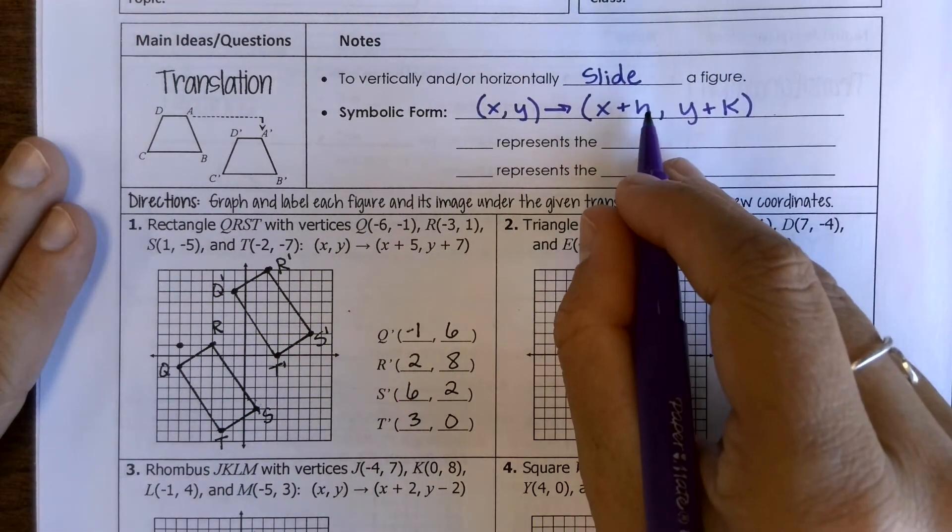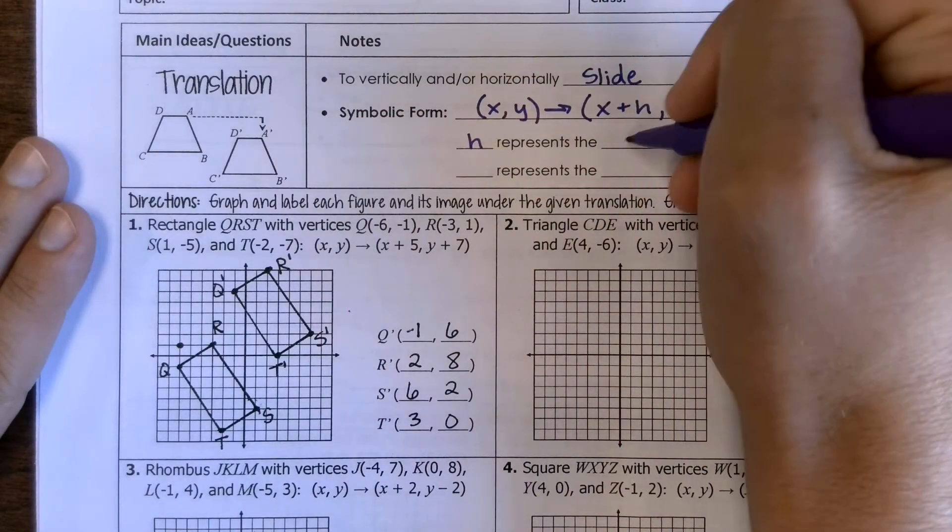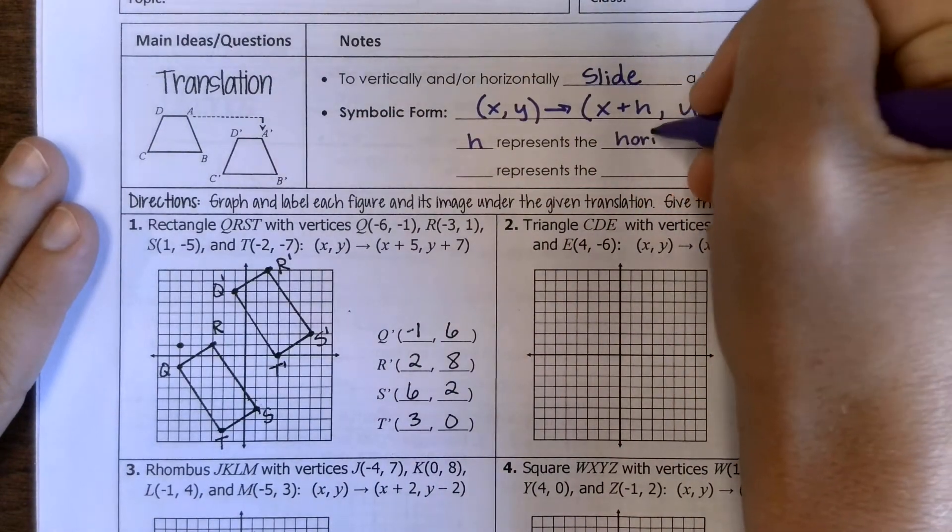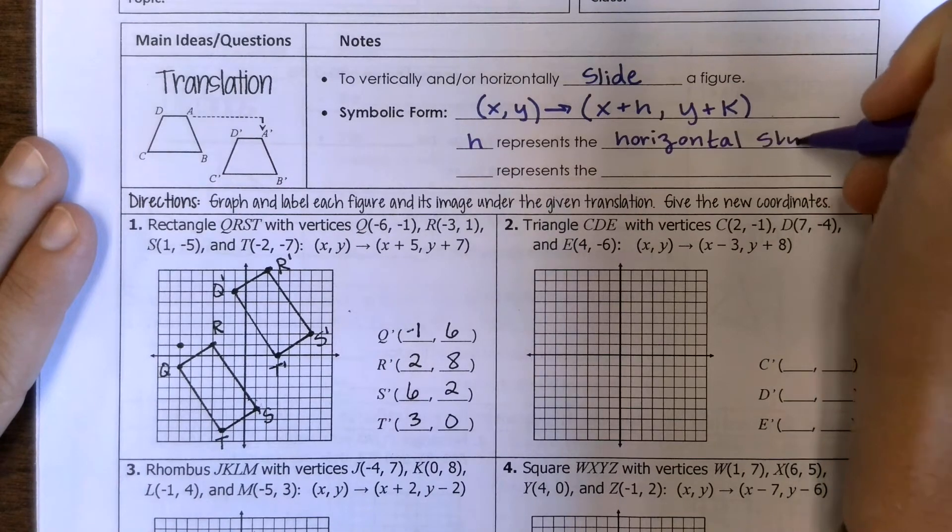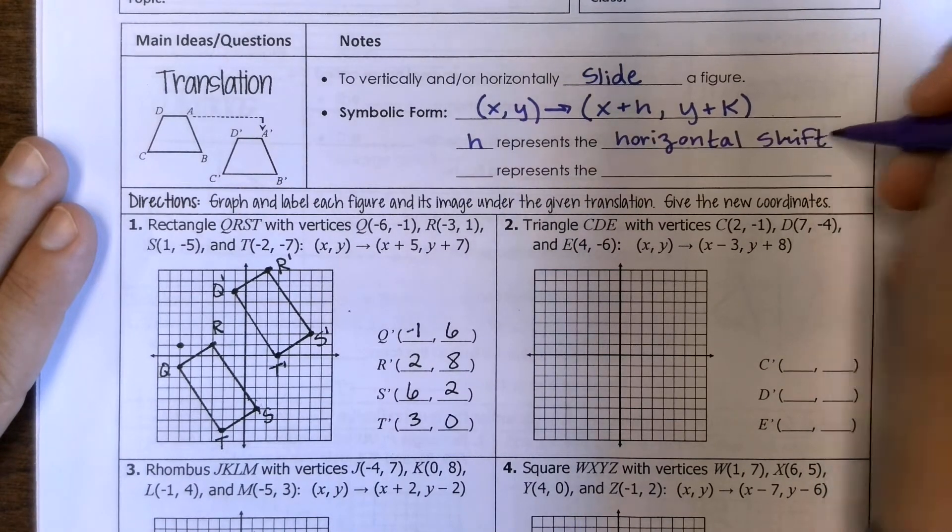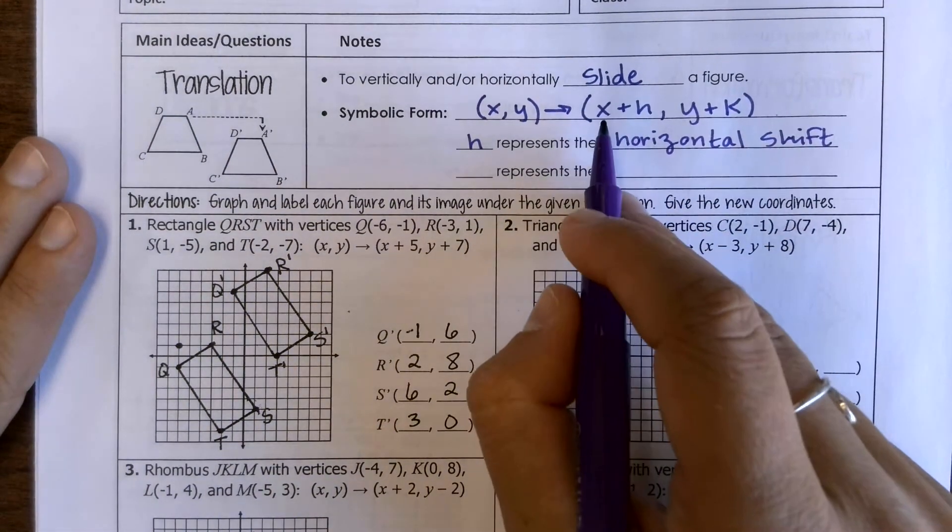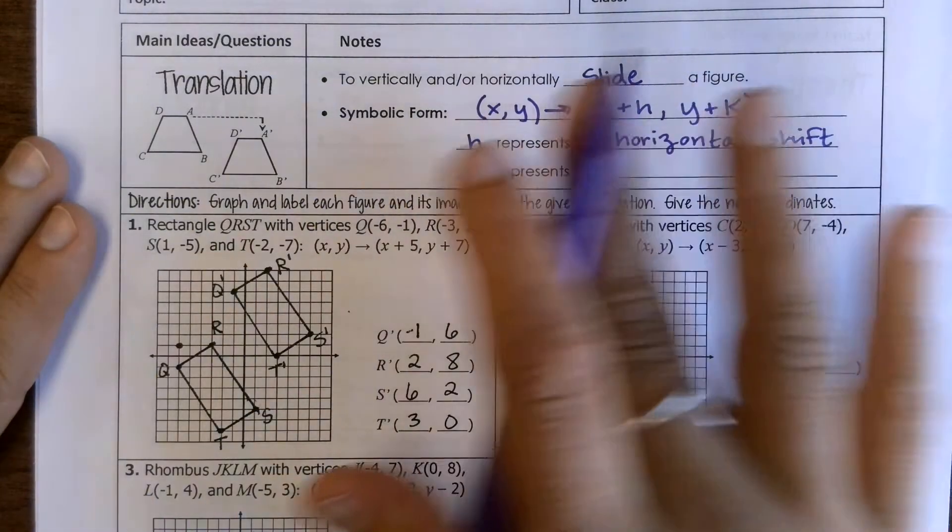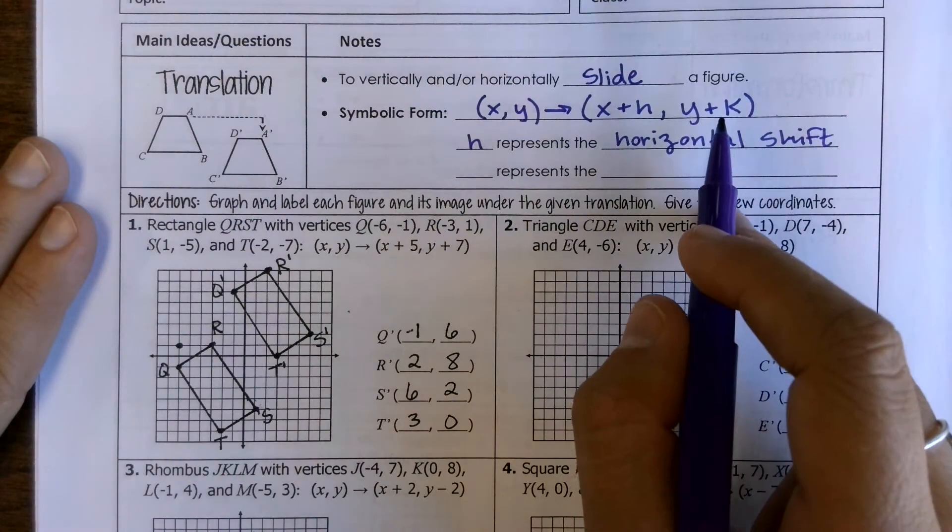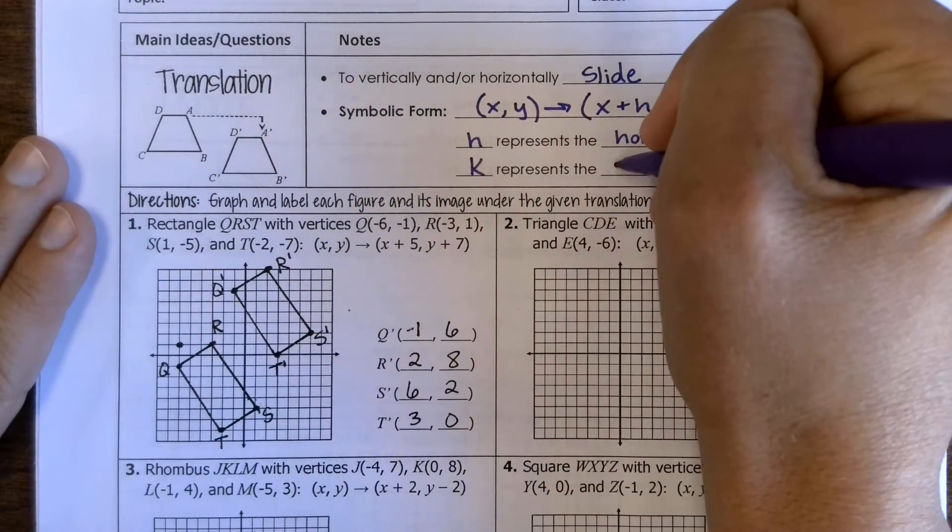And for this your h is representing the horizontal shift because it's telling you this is how many units you're going to add or subtract to your x value so that's going to control your left and right shift. Your k is going to represent your vertical shift.